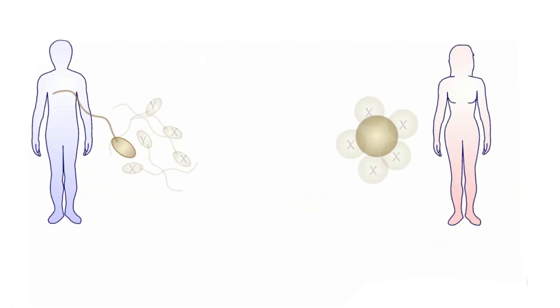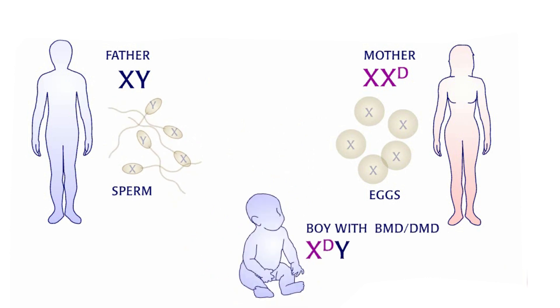A boy gets muscular dystrophy when he inherits an X chromosome with a mutated dystrophin gene from his mother. A boy can also get Duchenne or Becker even if his mother does not carry a mutated dystrophin gene.